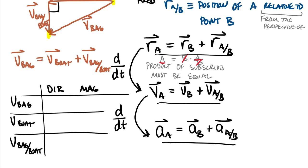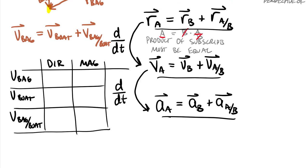The reason I'm highlighting this table is to show that there are six unknowns incorporated in these three vector terms. When solving these problems, make a table: identify your knowns and unknowns. You can only solve for two unknowns at a time because each vector equation in 2D splits into an x-component equation and a y-component equation — giving two equations to solve for two unknowns. So the maximum is two unknowns in a 2D problem.